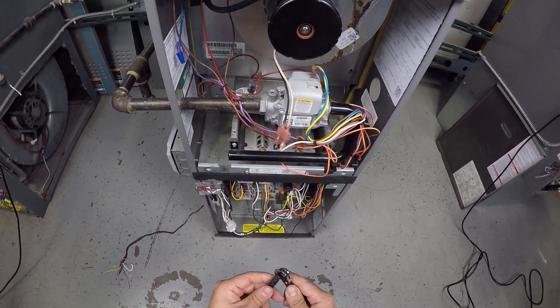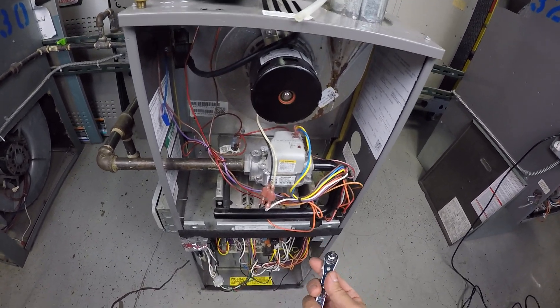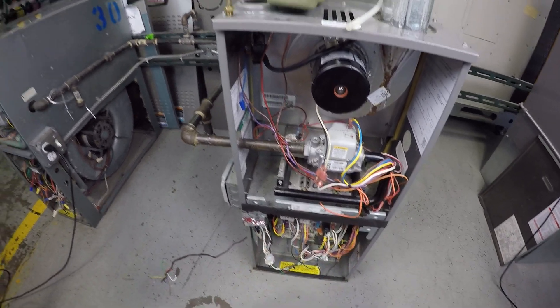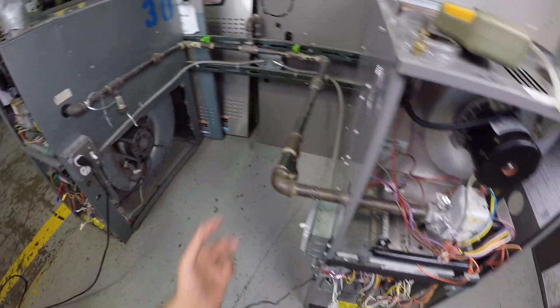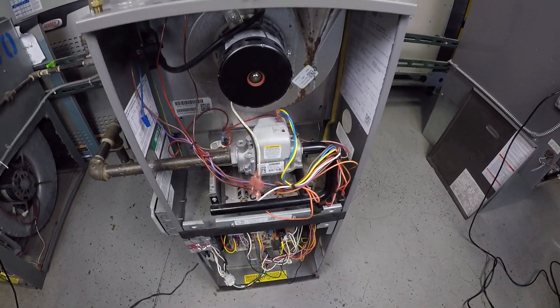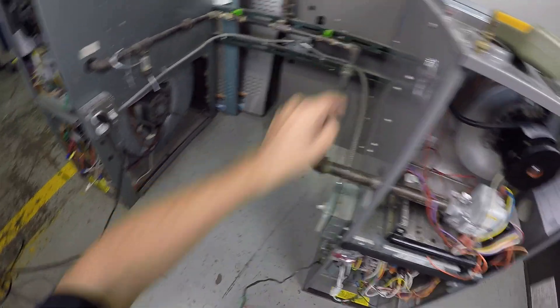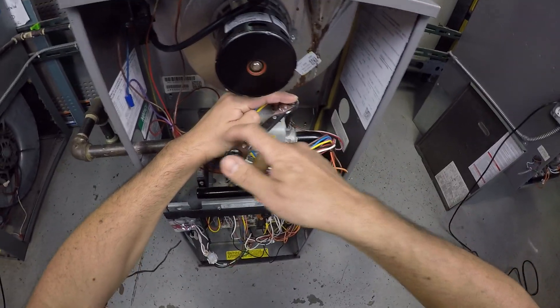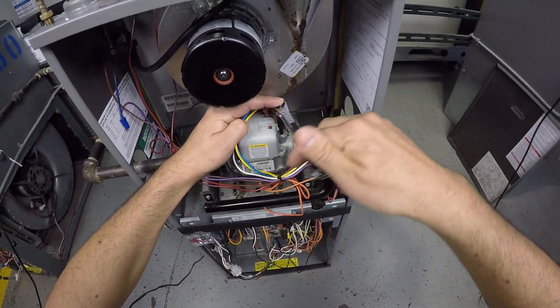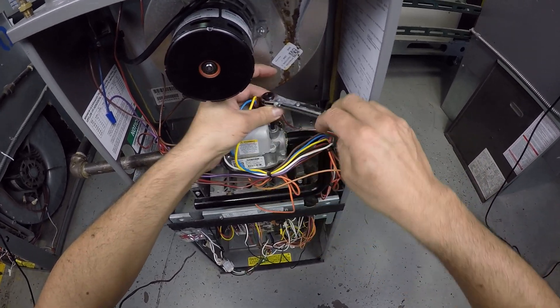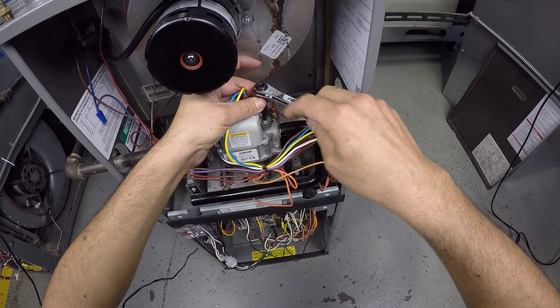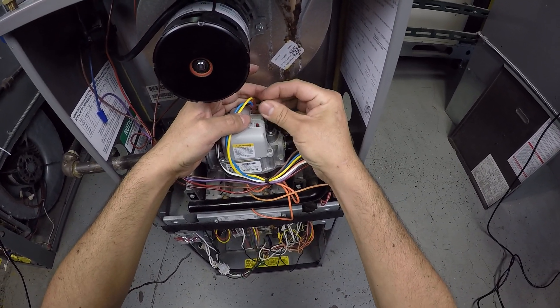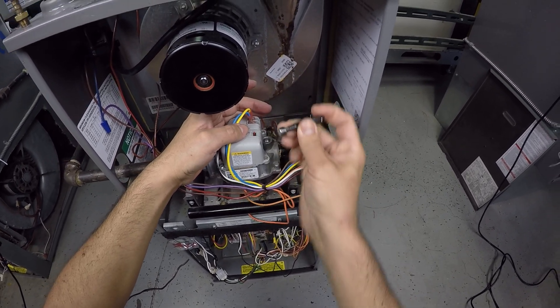Now, we're going to check the gas pressure coming out, or what they call the manifold pressure. To check the manifold pressure, it is kind of important that you also have your gas closed. Because of safety, let's just keep that closed. And now, we're going to remove the cap on the other side of the gas valve. I loosen up the cap, remove the wrench, and I use the fingers to remove the whole cap.